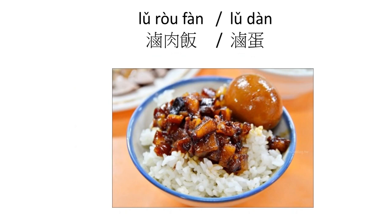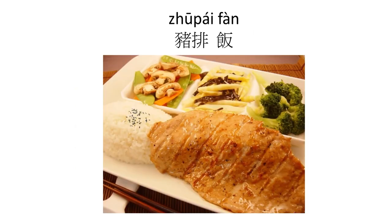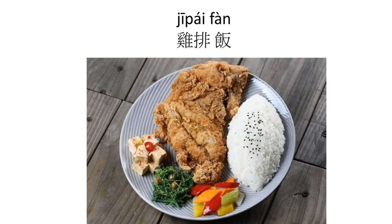滷味 is stew-style food, commonly sold at every 小吃店 snack food shop. 卤肉飯 is braised pork rice, and 卤蛋 is egg in that same braising sauce. 豬排飯 — 豬 is pork, 排 is fillet, and 飯 is rice. 雞排飯 — 雞排 is chicken fillet, always fried, served with rice.